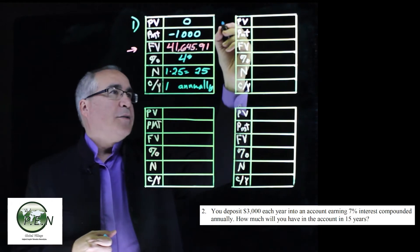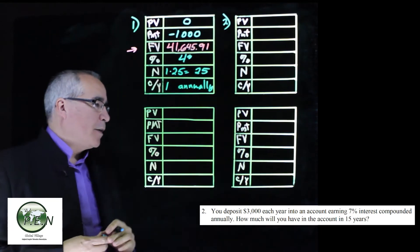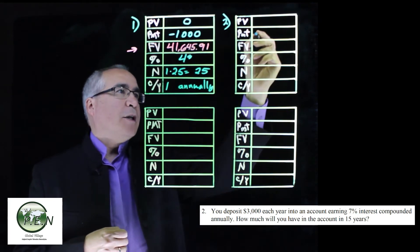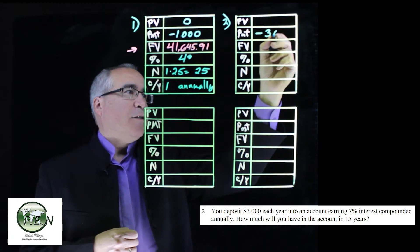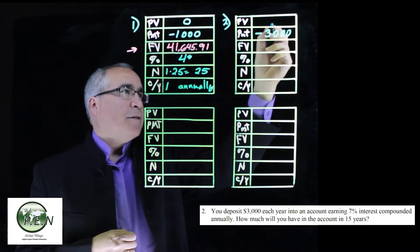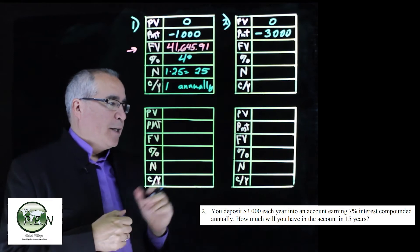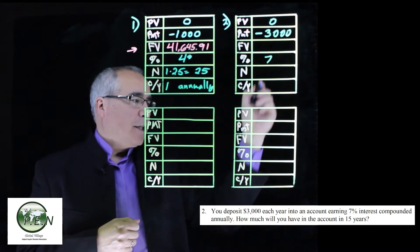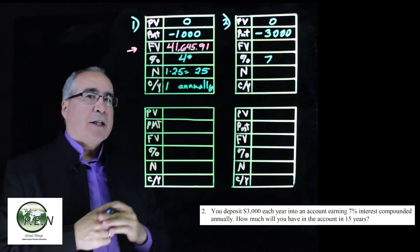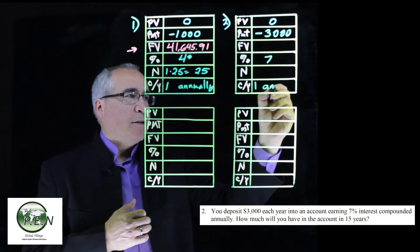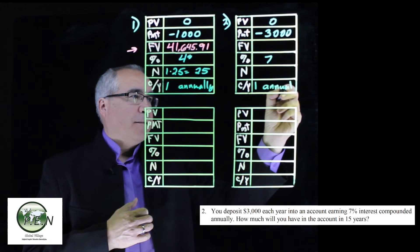For number two, let's take a look at this example. We're going to deposit $3,000 each year. So again, that's going to be a payment amount. It's going to go away from us, so it's negative. There is no additional upfront deposit. It's earning 7%, compounded annually. So we'll put the one down here or annual.